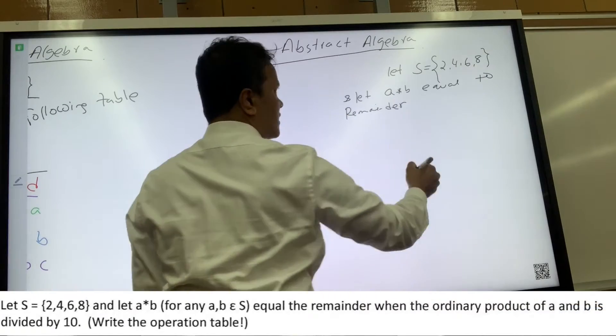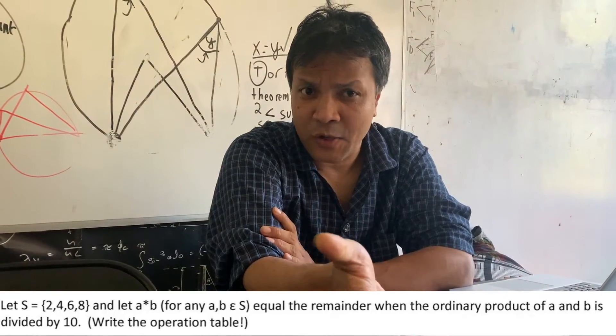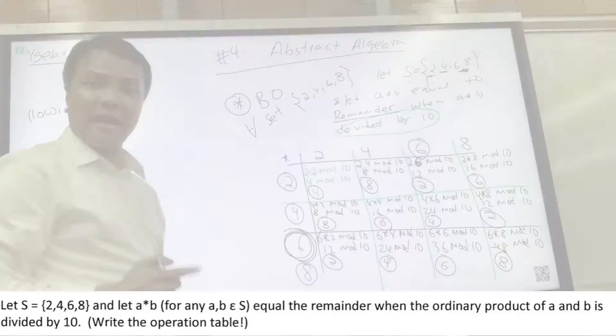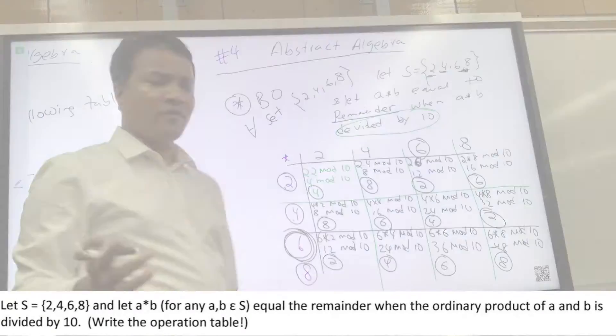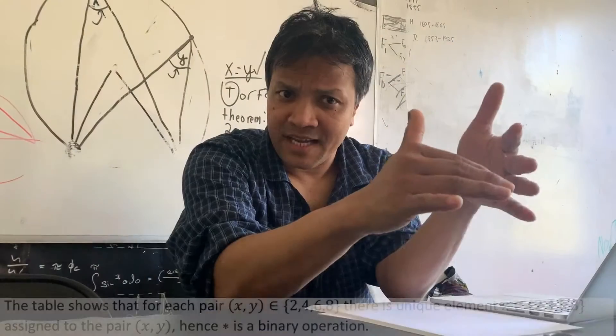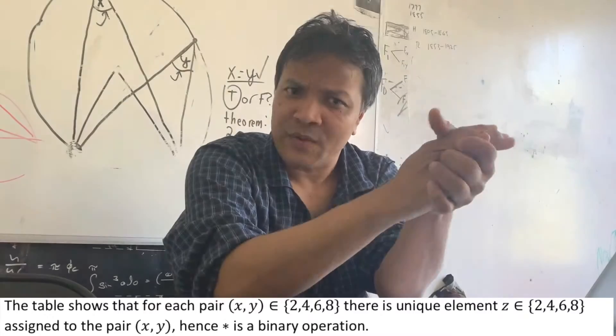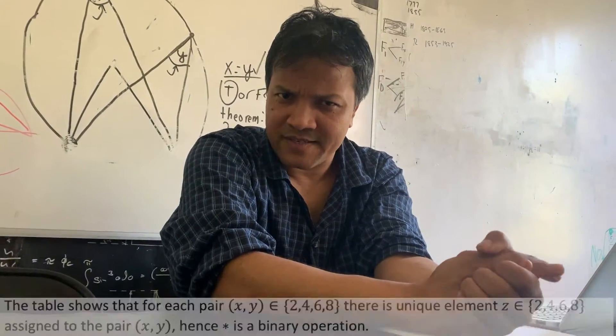The problem was S is a set with four elements: 2, 4, 6, 8. a*b is the ordinary product when you divide it by 10 to check whether Z belongs to the set S. Every element in Z also belongs to S, so it is a binary operation.